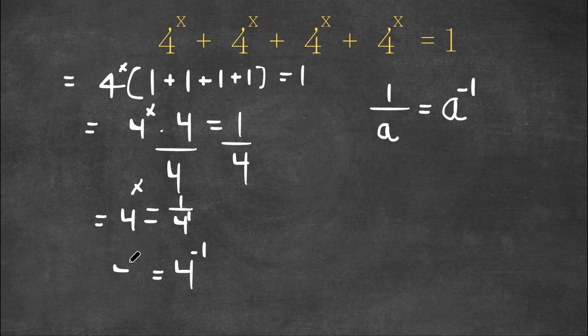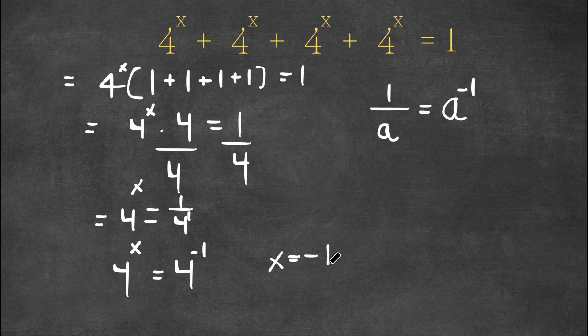So now we have 4 to the power of x is equal to 4 to the power of negative 1. This means that x is equal to negative 1. So this is our answer.